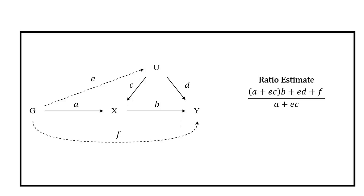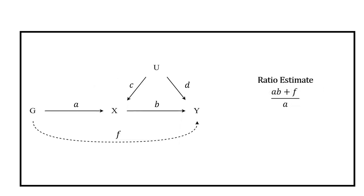The MR assumptions directly relate to the ratio estimate for each genetic variant. First, we assume the genetic variant is associated with the exposure, making A not equal to 0 — this is referred to as instrument strength. Next, we assume the genetic variant is not associated with unmeasured confounders of the exposure and outcome, making E equal to 0, cancelling out the EC and ED terms. The final assumption relates to the direct association between a genetic variant and the outcome, referred to as horizontal pleiotropy. Provided that F is equal to 0, ratio estimates should converge to the exposure-outcome association B.